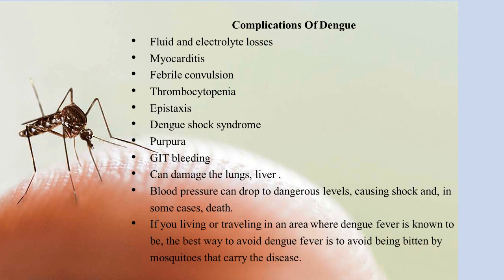Complications of Dengue fever include: fluid and electrolyte losses, myocarditis, febrile convulsion, thrombocytopenia, epistaxis, Dengue shock syndrome, purpura, gastrointestinal tract bleeding. It can also damage the lungs and liver. Blood pressure can drop to a dangerous level, causing shock and in some cases death.